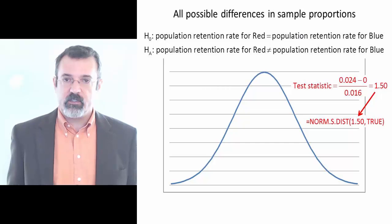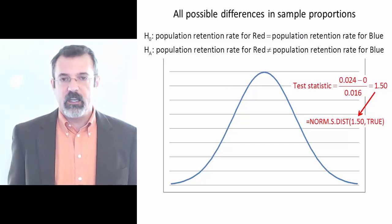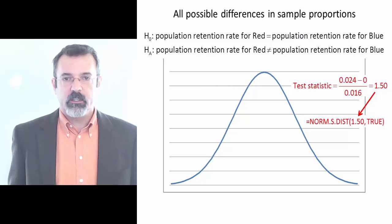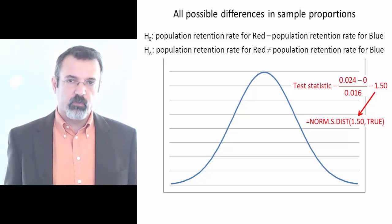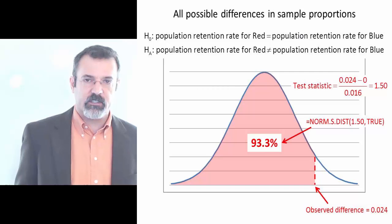Norm.s.dist takes two arguments. The first is the test statistic, in this case 1.50. The second is the word true.